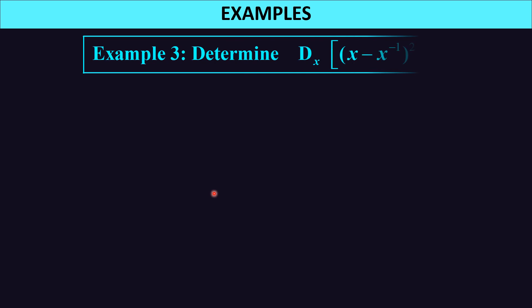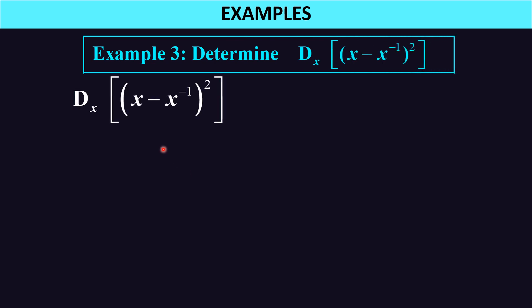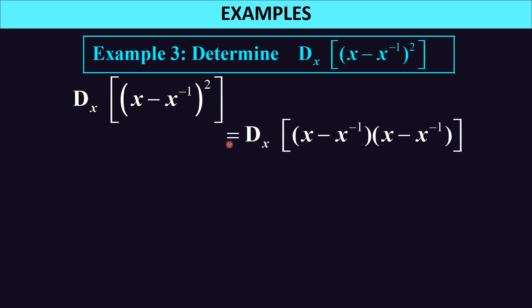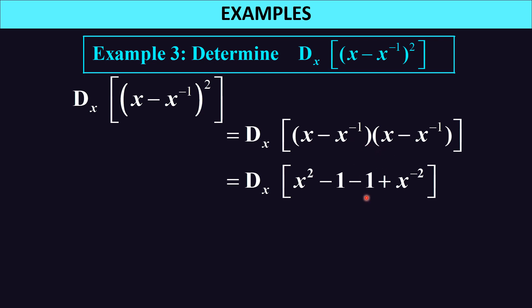Let's look at our third example: differentiate (x minus x to the negative 1) all squared. First we have to expand: x minus x to the negative 1, times x minus x to the negative 1. Expanding gives x squared, then x times negative x to the negative 1 is negative 1, then negative x to the negative 1 times x is another negative 1, and x to the negative 1 times x to the negative 1 is x to the negative 2. Combining like terms: x squared minus 2 plus x to the negative 2.